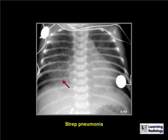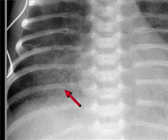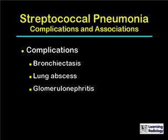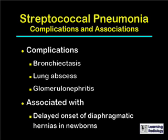This is an example of neonatal streptococcal pneumonia. The red arrow points to an area of patchy airspace disease at the right lung base. Complications of streptococcal pneumonia include bronchiectasis, lung abscess, and glomerulonephritis. Streptococcal pneumonia can also be associated with a delayed onset of diaphragmatic hernia in a newborn.